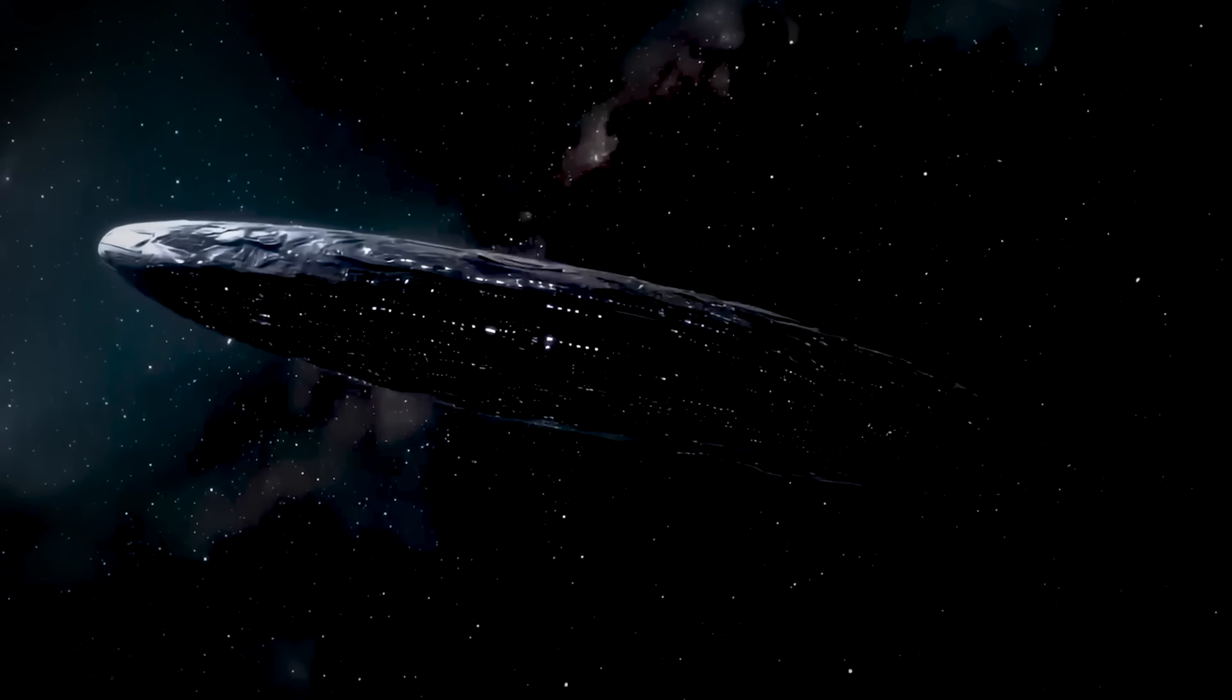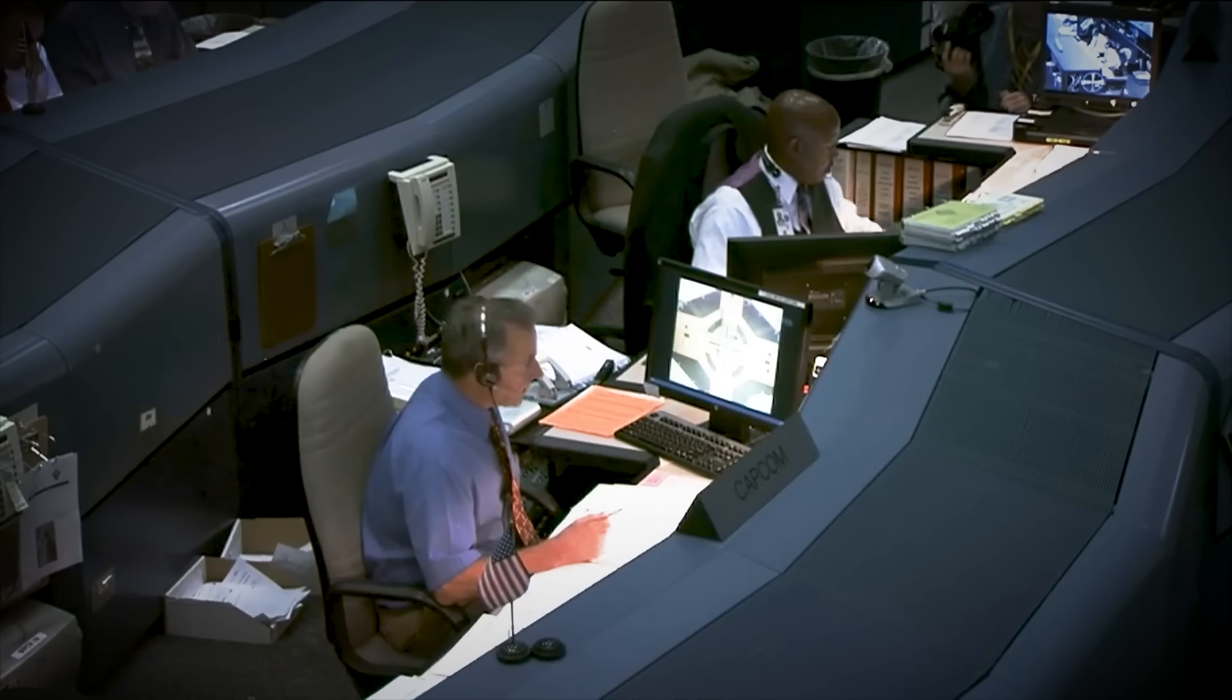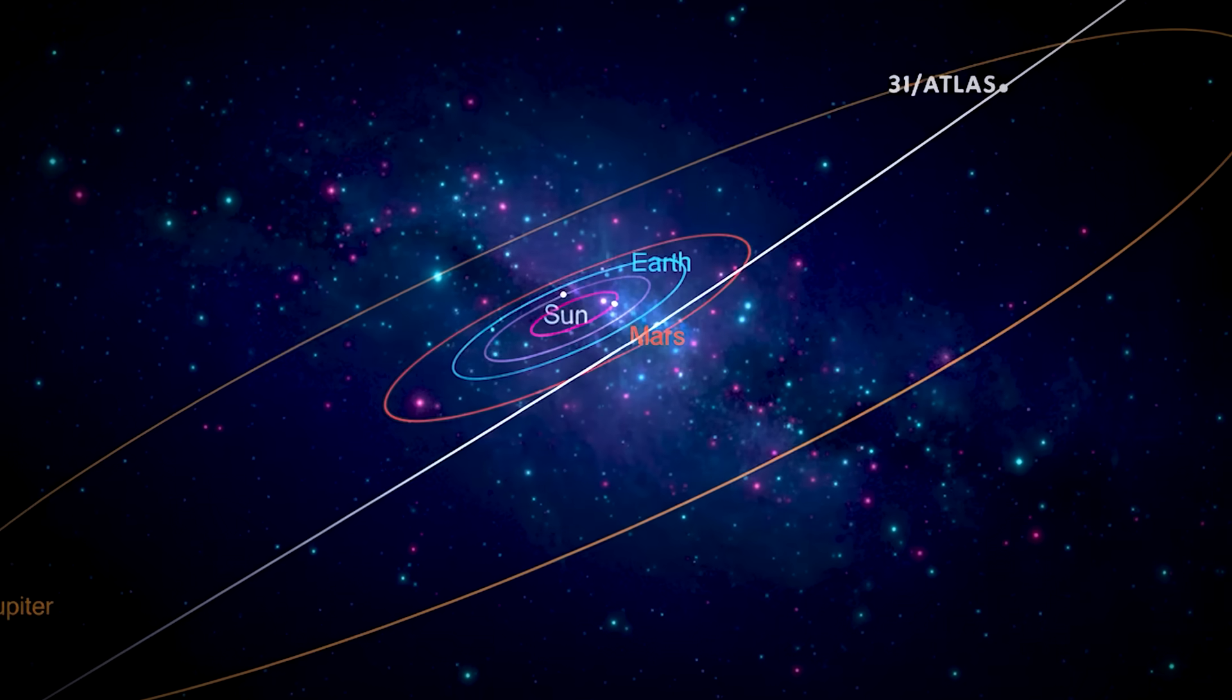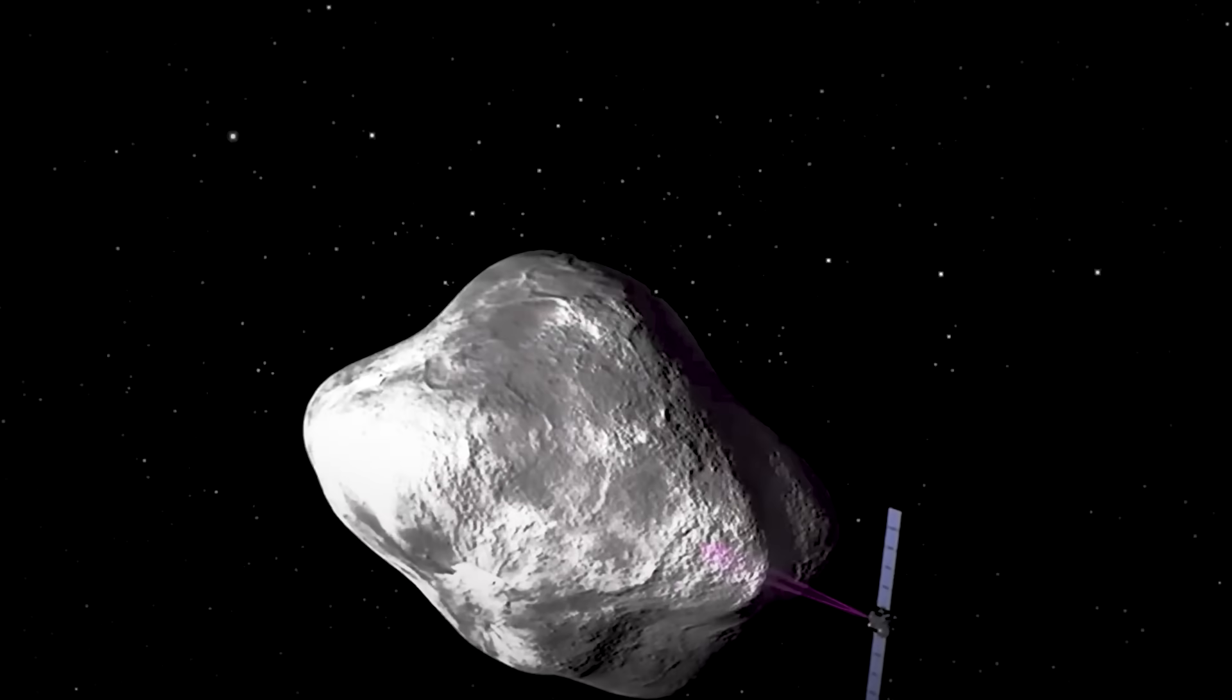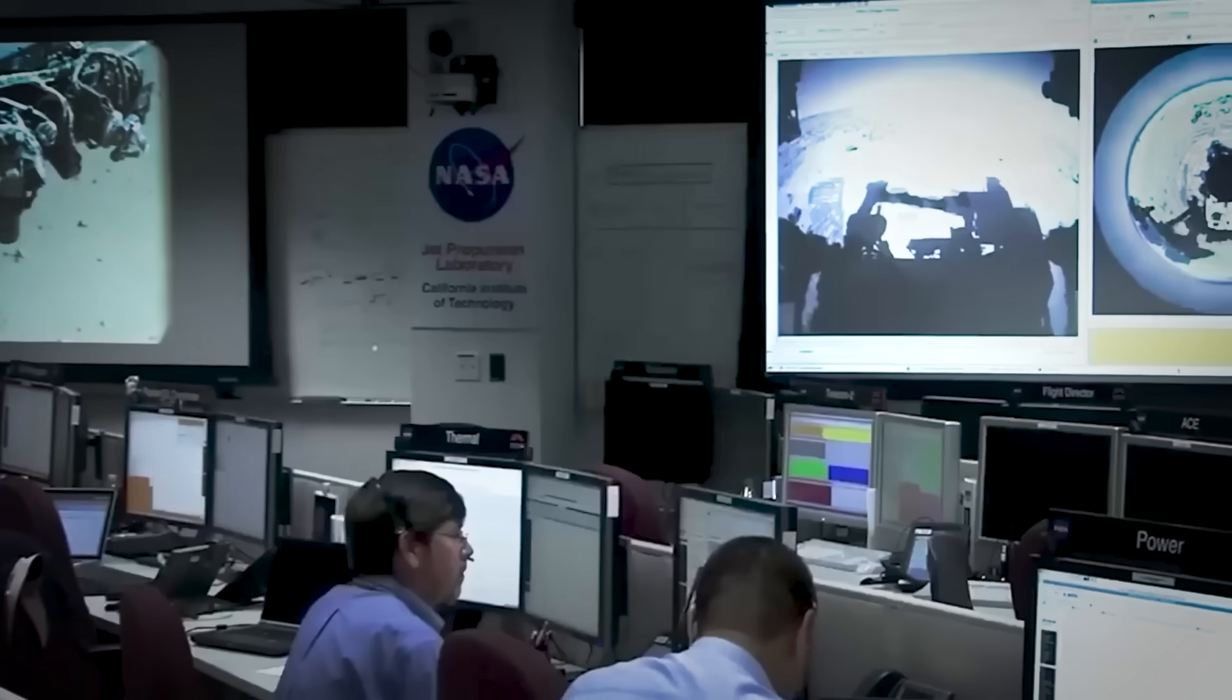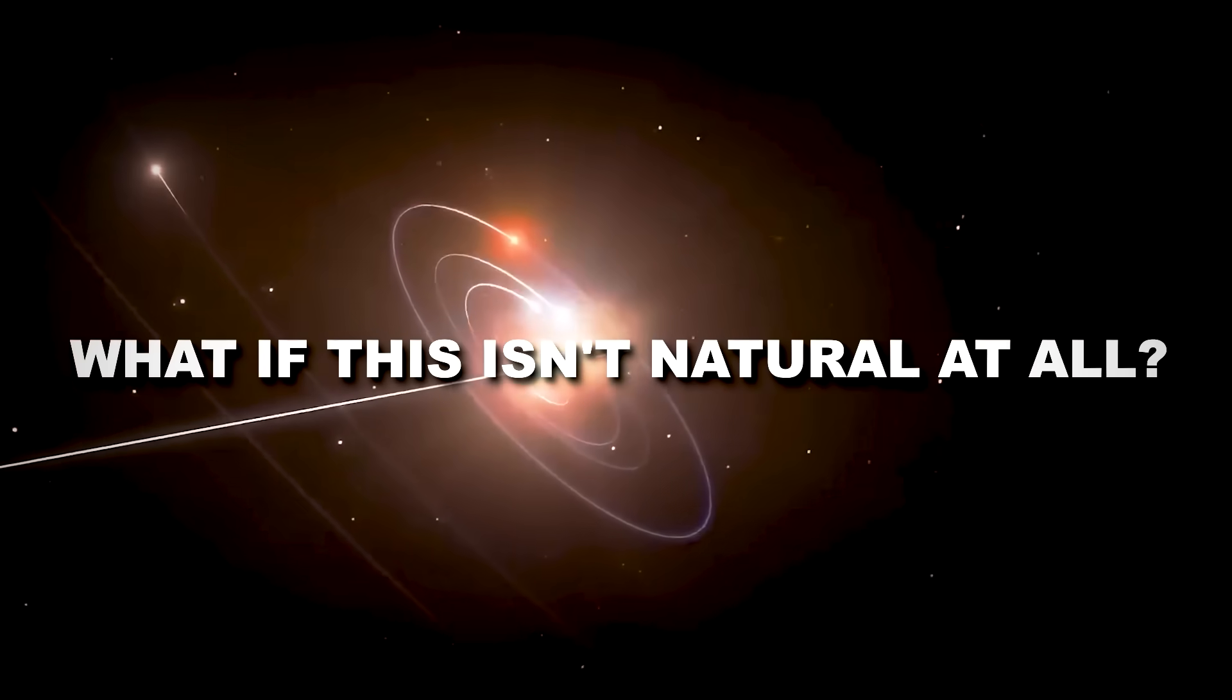And contains industrial grade nickel that shouldn't exist in nature. But here's what's really got scientists on edge. 3I Atlas arrived with a trajectory so perfectly aligned with our planets that the odds of it happening by chance are 0.005%. Some researchers are now asking a question that would have been laughable just months ago. What if this isn't natural at all?